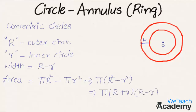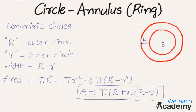So the area of the ring is given by the formula π(R + r)(R - r), and the width of the ring is the difference between the radii, represented as capital R minus small r.